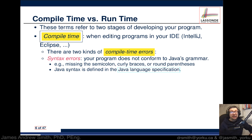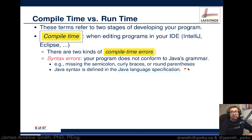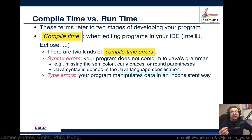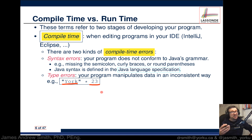Syntax is defined in a number of places — for instance, you can look at examples in a book like the Java Pocket Guide, or go to the Oracle Java Language Specification, which is more dry but a very authoritative source. There are also type errors, which refer to the manipulation of data in an inconsistent way. For example, taking the string 'york' and multiplying it by 23 — that's not how you manipulate a string versus a number, and that would be a type error to avoid.